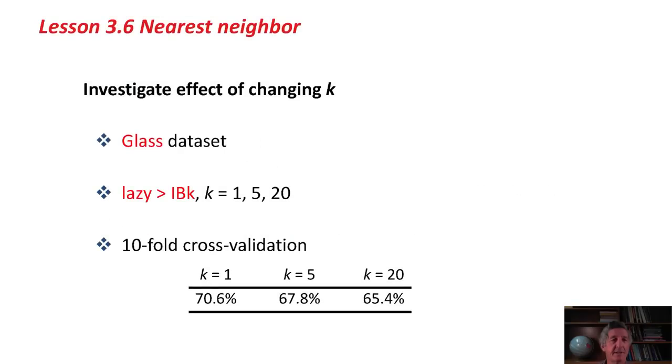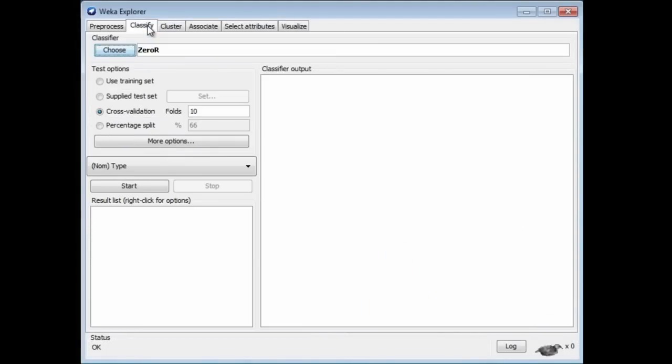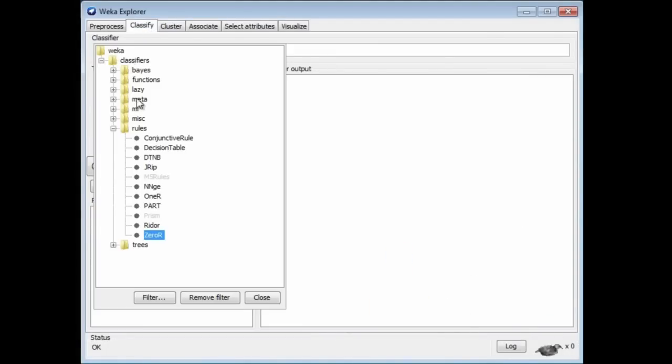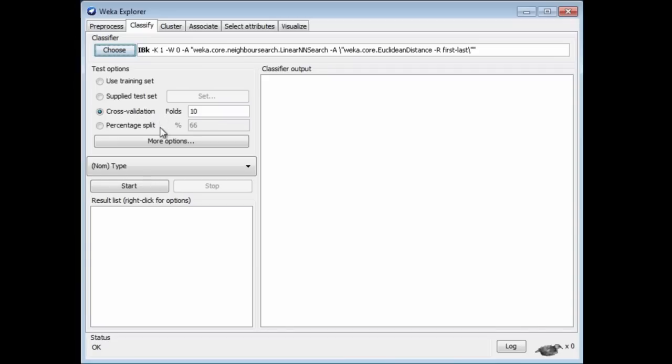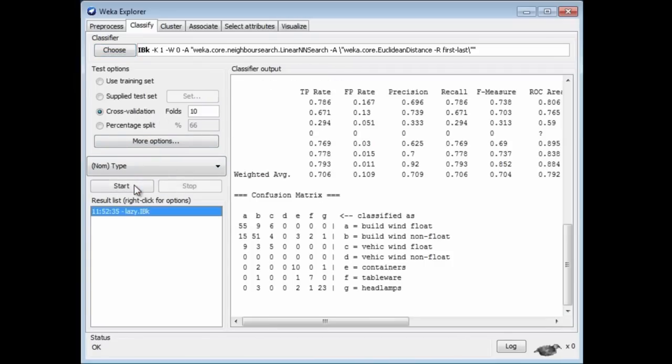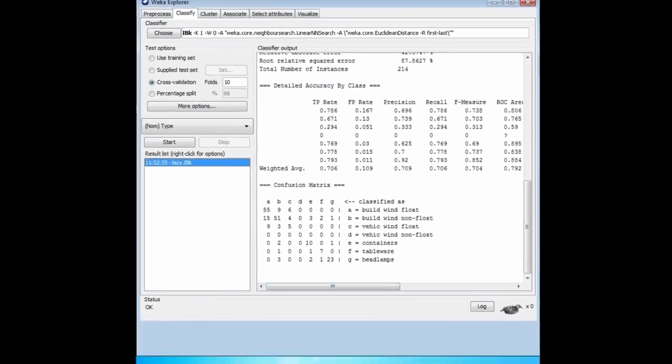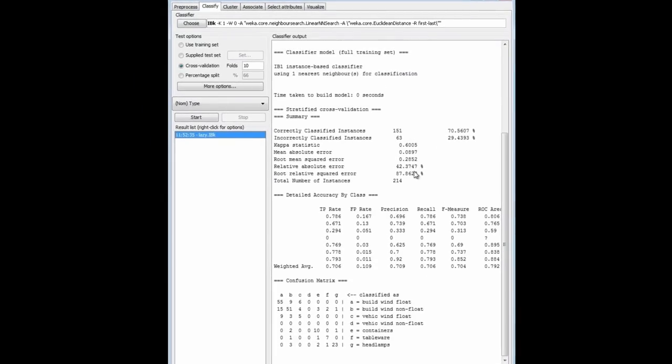Let's open the glass data set, which is here. Go to Classify, and choose the lazy classifier IBK. Let's just run it, and we get an accuracy of 70.6%. The model is not really printed here because there is no model. It's just a set of training instances.